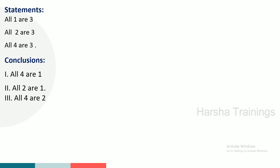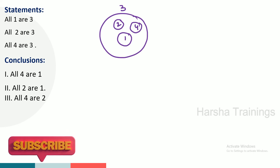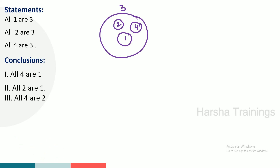Next problem: all 1 are 3. Next statement: all 2 are 3. Next: all 4 are 3. Between 1 and 4, and between 2 and 1 there are no direct relations. So coming to the conclusions: all 4 are 1 — 4 inside, 1 outside — no, first conclusion does not follow. All 2 are 1 — 2 inside, 1 outside — no, wrong. All 4 are 2 — 4 inside, 2 outside — no. So none follows.